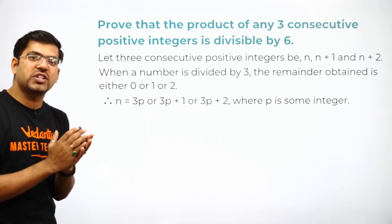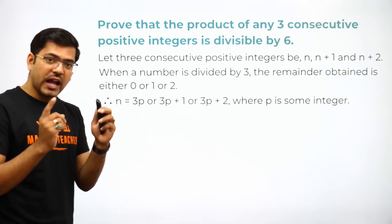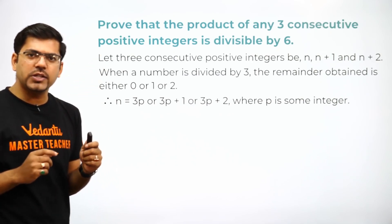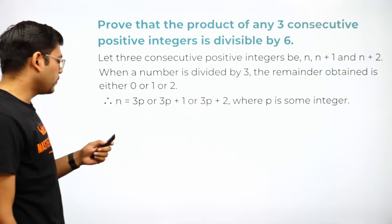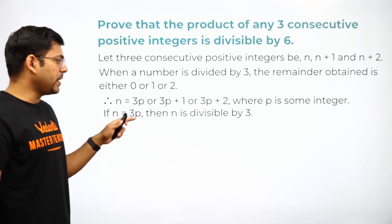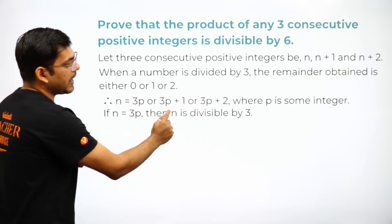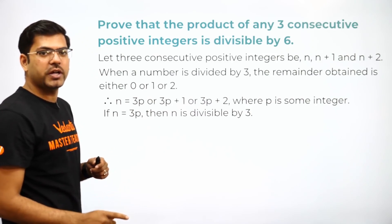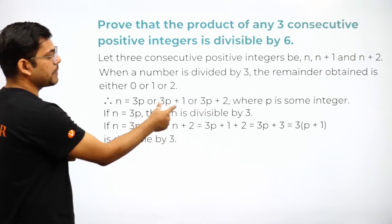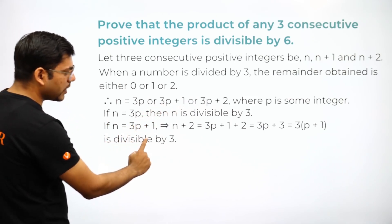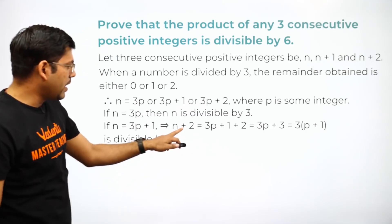These steps are very important — you should write them in your examination for full marks. Now, if n is equal to 3p, then n is divisible by 3. If n is not equal to 3p, then n will be equal to 3p+1.